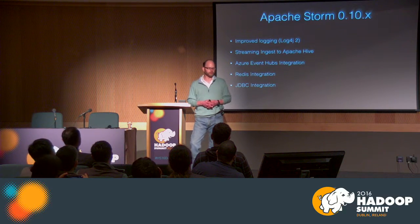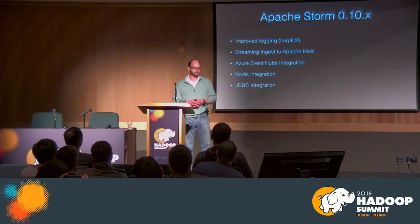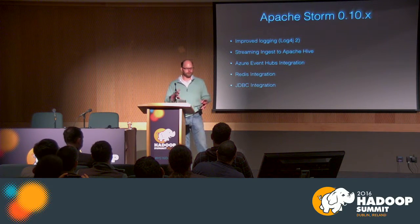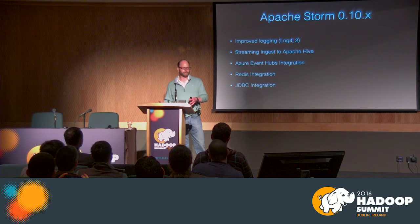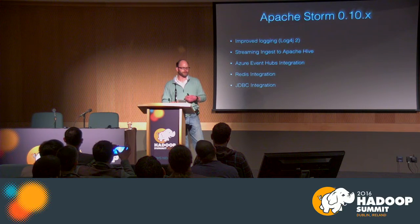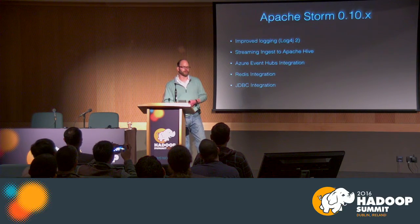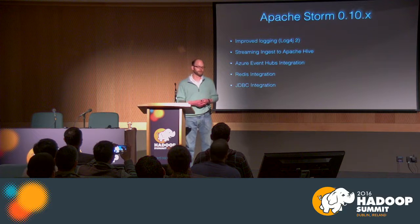That release also introduced partial key groupings, which addressed dealing with data skew among fields groupings. We improved logging by moving to log4j2, which is a lot faster and more performant. We added Hive integration, Azure Event Hub integration, Redis integration, and JDBC integration. Some of those are bolts — for example, JDBC — and some are spouts, for example, Azure Event Hubs.